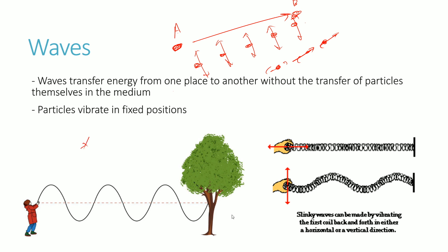Here is an example of a transverse wave where you've got your rope hooked onto a tree and you're raising the movements up and down. That leads to these molecules of the rope in different positions moving in their fixed positions up and down. The up-and-down movement of the molecules is actually 90 degrees to the direction of the wave itself. That 90-degree angle defines a transverse wave.